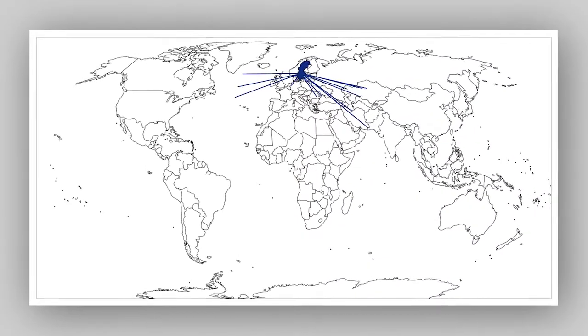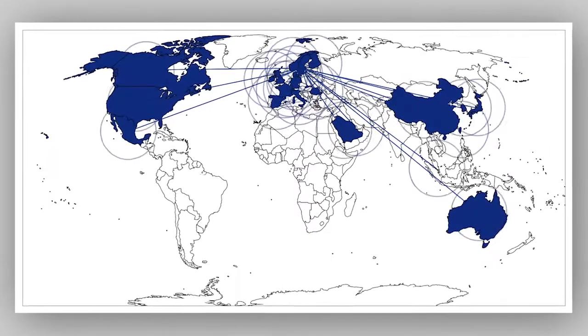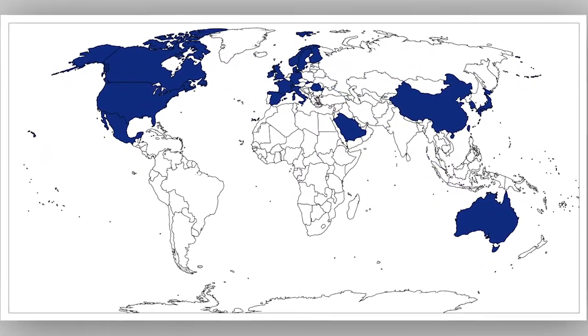Cellink's products are already in over 25 countries worldwide. Next year, we will further our investments in commercialization of our products, as well as new generations of bioinks and 3D bioprinters.